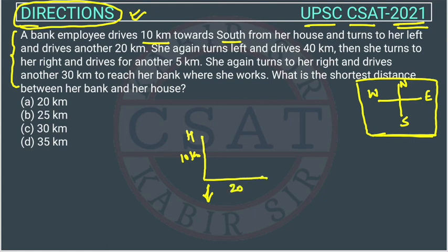She again turns left. She is now facing north, so the left turn takes her in that direction. She drives 40 km, so this segment is 40 km going northward.